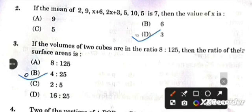Question number two: If the mean of the given numbers is seven, then the value of x is three. Next question: If the volumes of two cubes are in the ratio of 8 to 125, then the ratio of their surface areas will be 4 to 25.